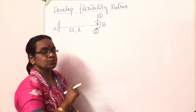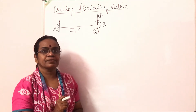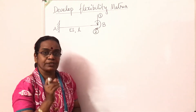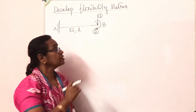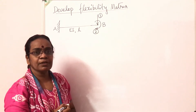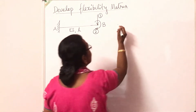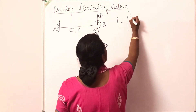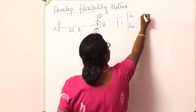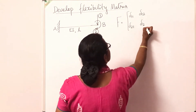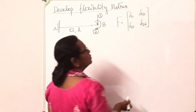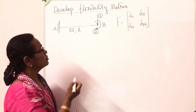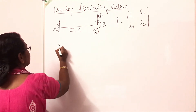Coordinate 1 represents a unit vertical force at point B, and coordinate 2 means a unit moment at point B. These are the force coordinates given to you. You have to develop the flexibility matrix. Since two coordinates are given, the flexibility matrix will be a 2×2 matrix, having the terms δ11, δ21, δ12, and δ22. We have to develop these four flexibility influence coefficient terms.